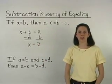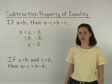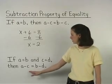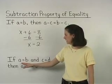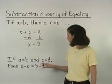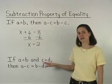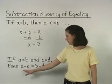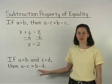Another way of stating the subtraction property of equality is as follows: If A equals B and C equals D, then A minus C equals B minus D.